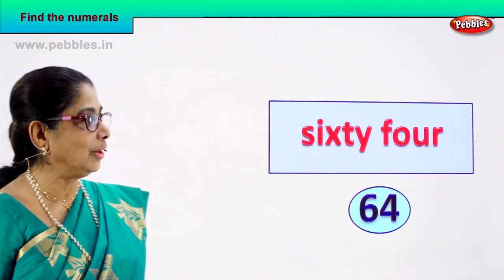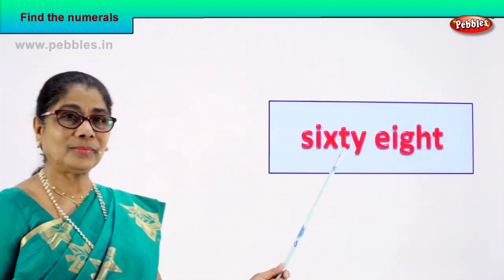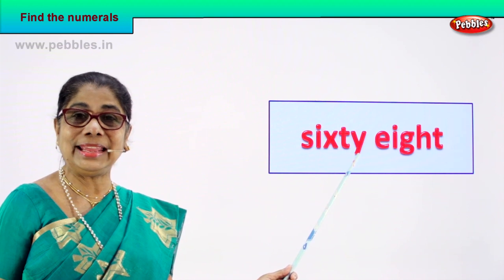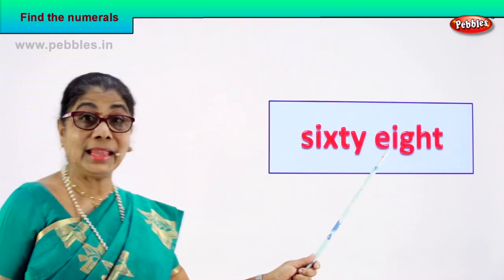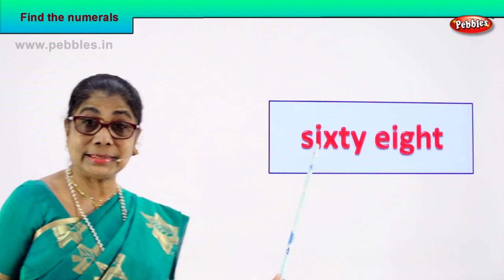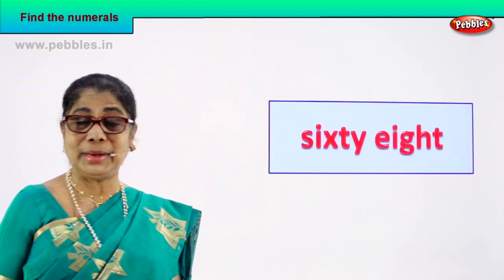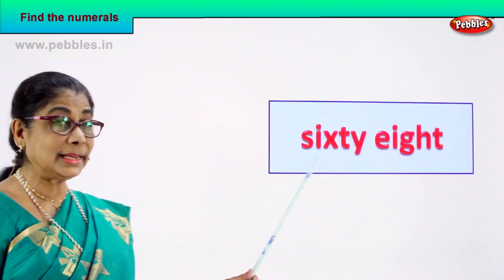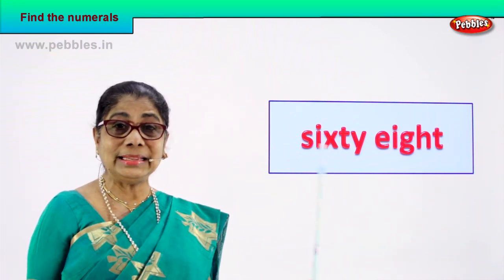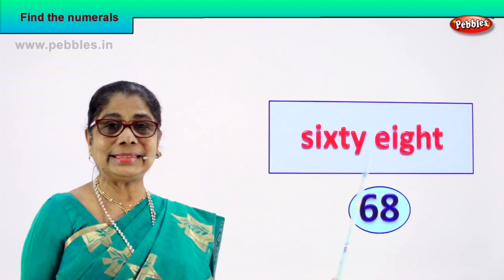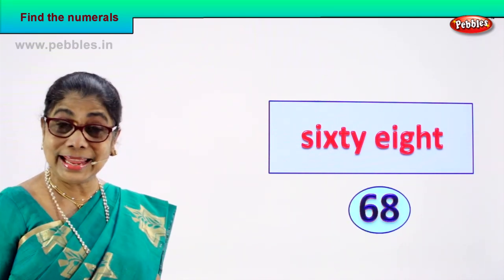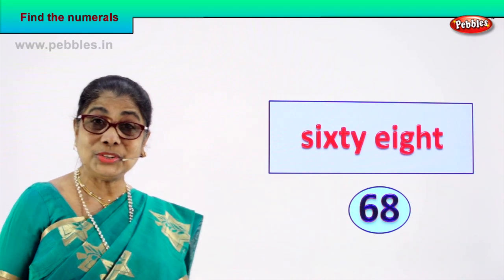Let's take our next number name. Spell: S-I-X-T-Y, sixty, E-I-G-H-T, eight — 68. That's the number name given to you. 68. How do we write the numeral? 68. 6 and 8 — 68. Good. Did you enjoy the exercise?